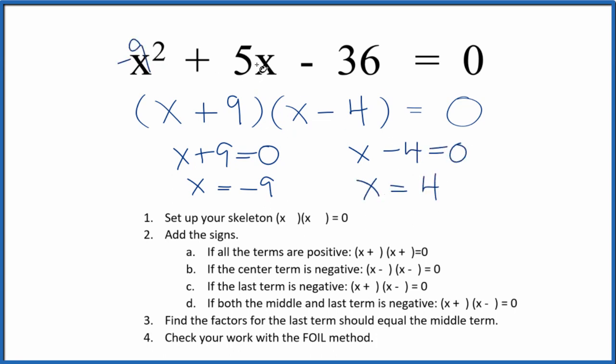If you put negative 9 in for x and you did the math, this would all equal 0. Likewise, if you put 4 in for x, you do the math, all of this equals 0. So we did this correctly.